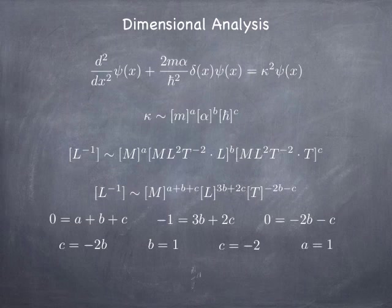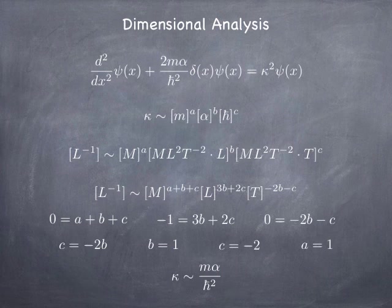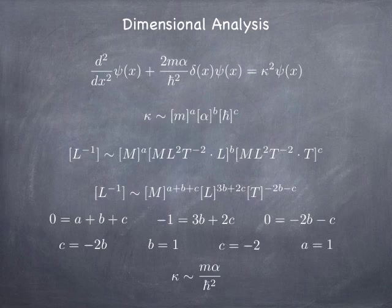And that tells us that, unit-wise at least, kappa has to be proportional to m alpha over h bar squared. It turns out it's not just proportional to, it's actually equal to, so the proportionality constant happens to be 1. But I just wanted to point out that dimensional analysis is a very powerful technique for estimating the behavior of solutions to differential equations, or at least to eigenvalues.